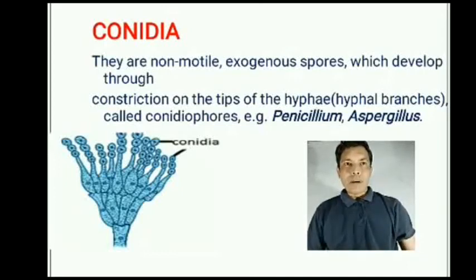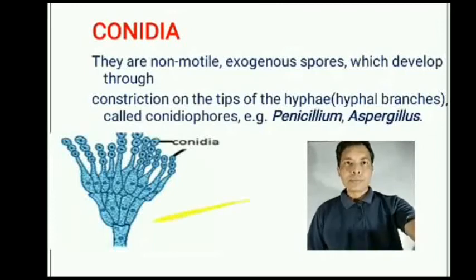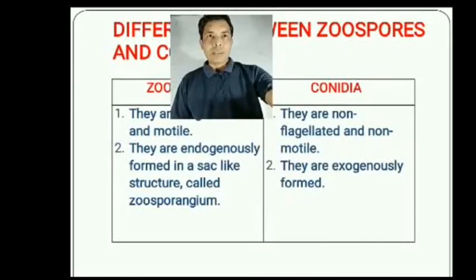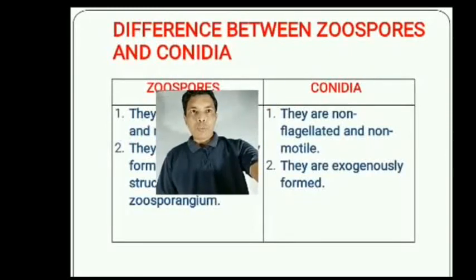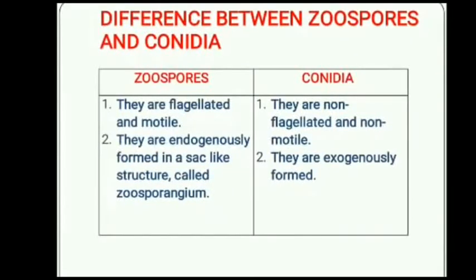Conidia are found in Penicillium and Aspergillus. The difference between zoospores and conidia: zoospores are flagellated and motile; conidia are non-flagellated and non-motile. Zoospores are endogenously formed inside a sac-like structure called a zoosporangium; conidia are exogenously formed.